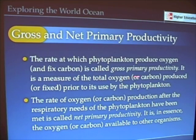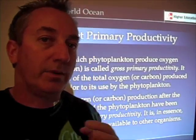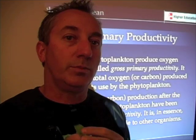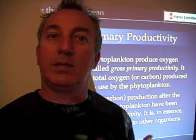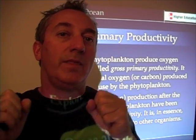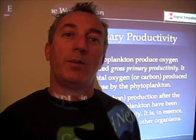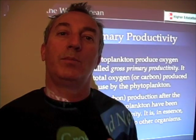The rate at which phytoplankton produce oxygen is called gross primary productivity, often symbolized as GPP. It's a measure of the amount of oxygen produced by the phytoplankton prior to their using it. Phytoplankton — like all plants — also have to use a little bit of oxygen to make their cells grow. So they produce oxygen and they use a little bit. The amount that they produce before anybody uses it is called gross primary productivity, or gross primary production.